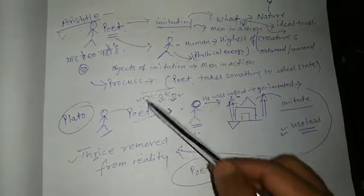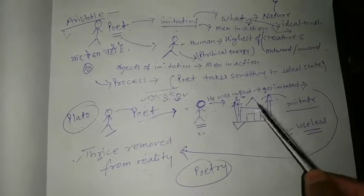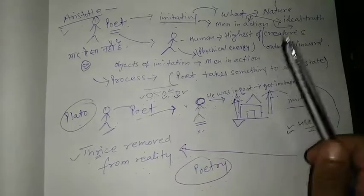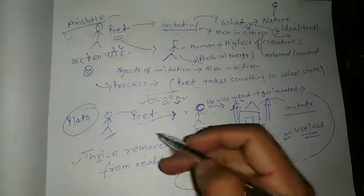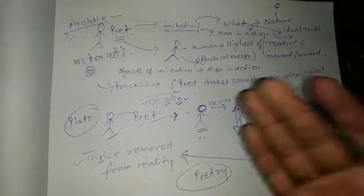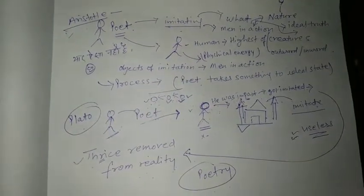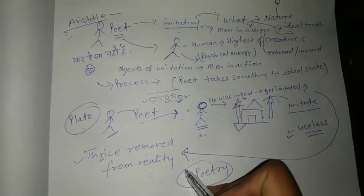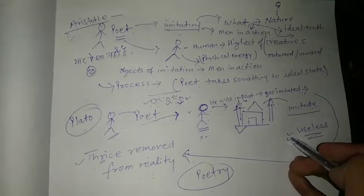Both are saying that Plato is saying poetry is imitation and imitation is bad, because imitation brings no good to human society or this is of no use. This was because of that time, Plato's time. We will be talking about that thing later. But just try to understand what is thrice removed from reality. Hopefully you got it and you got his idea why he calls it useless.